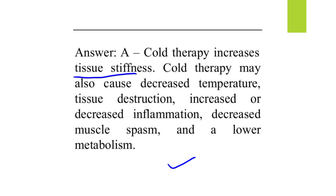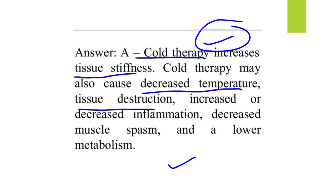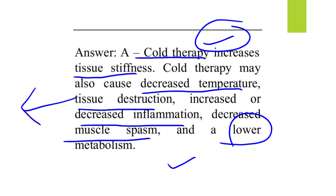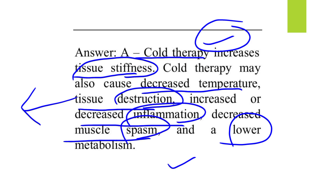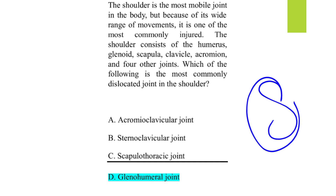Cold therapy increases tissue stiffness because it involves contraction of the muscles, while heat therapy relaxes muscles. Cold therapy may also cause decreased temperature, tissue destruction, increased or decreased inflammation, decreased muscle spasm, and lower metabolism. Remember: cold therapy increases tissue stiffness, decreases temperature, decreases muscle spasm, and lowers metabolism.